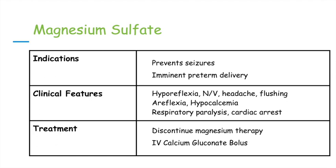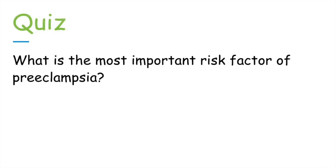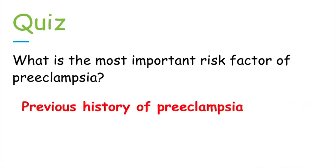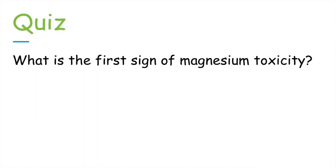Let's highlight some high yield points with a quick quiz. Question one: What is the most important risk factor for preeclampsia? That is a previous history of preeclampsia. Question two: What is the first sign of magnesium toxicity? That is hyporeflexia. This is very high yield — if you see a clinical vignette where a mother with a hypertensive disorder develops hyporeflexia, nausea, and vomiting, be very suspicious of magnesium toxicity.